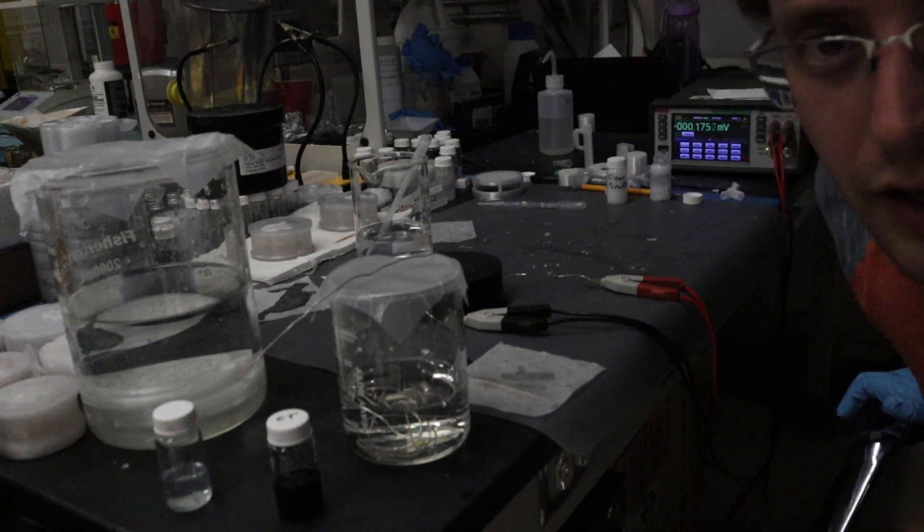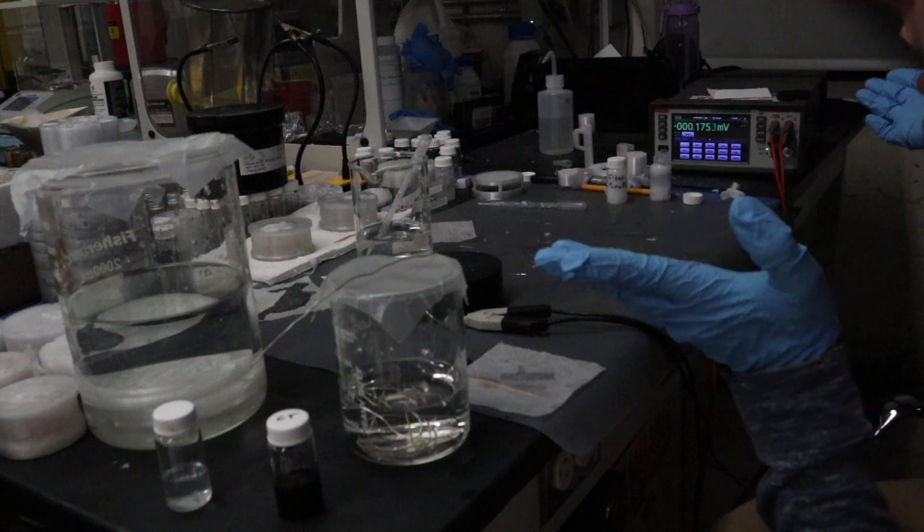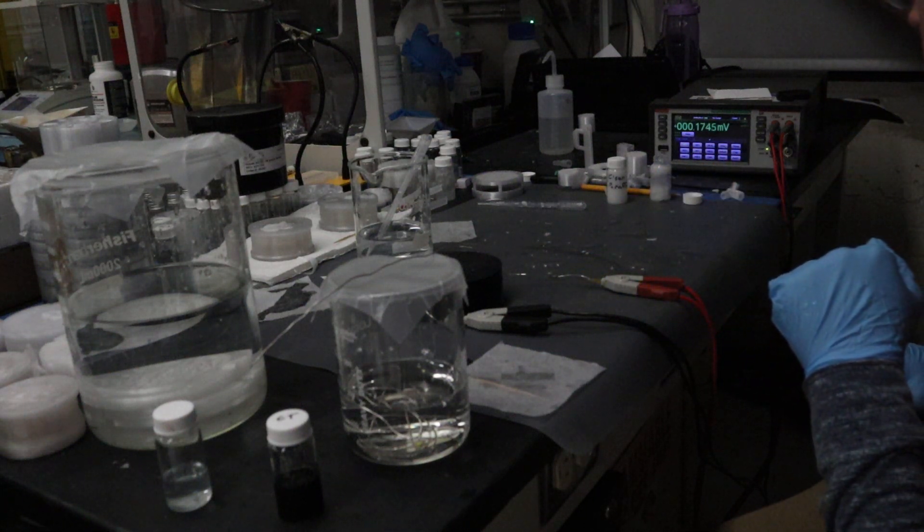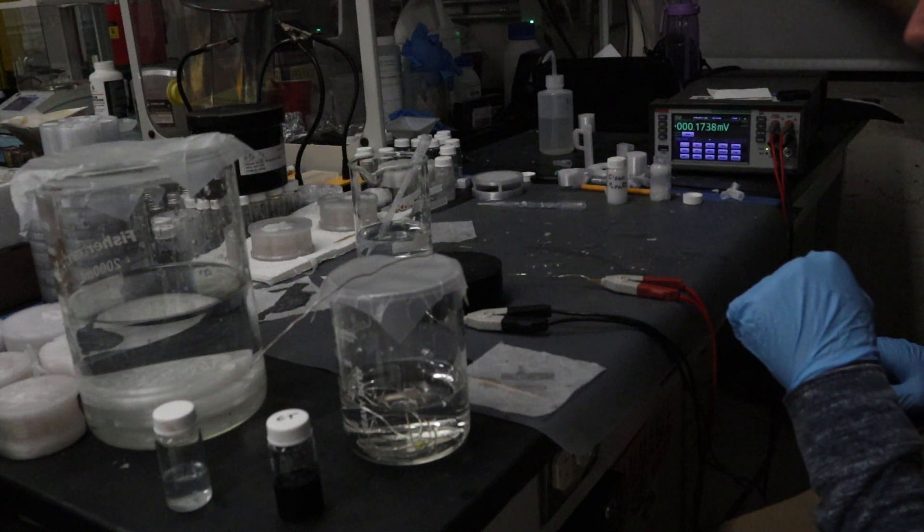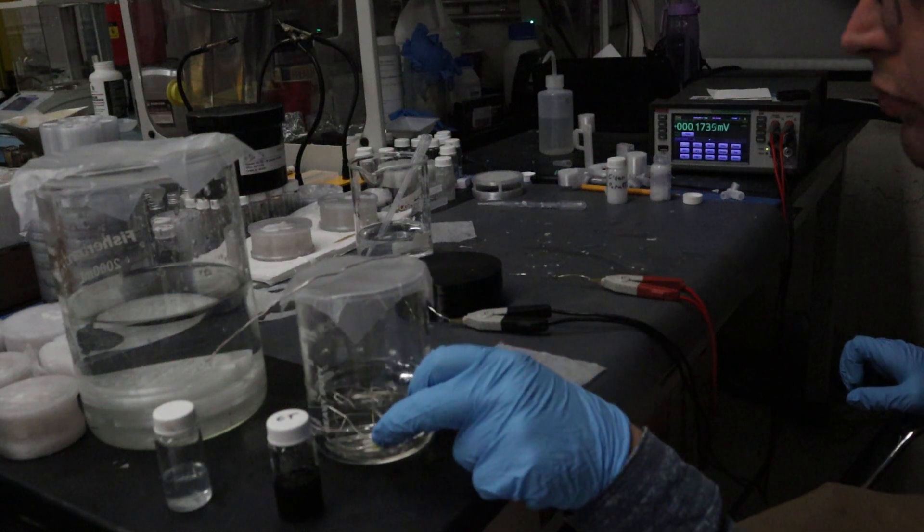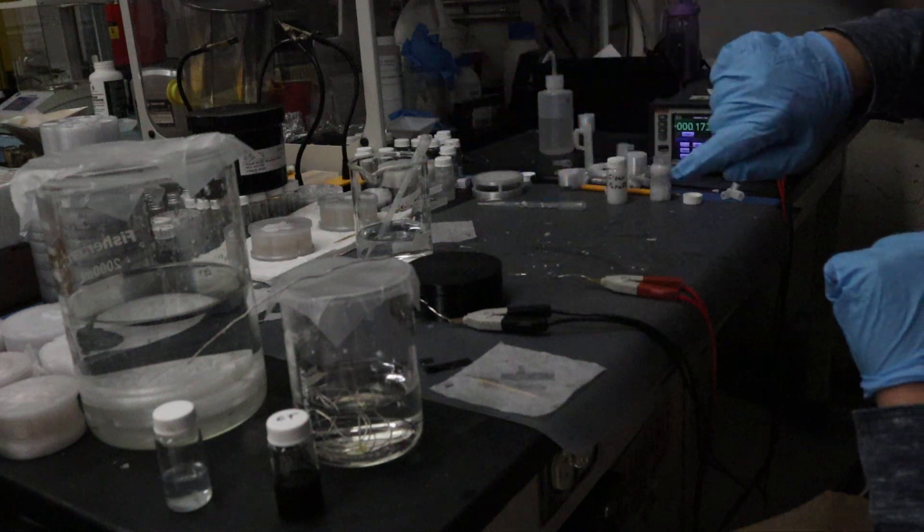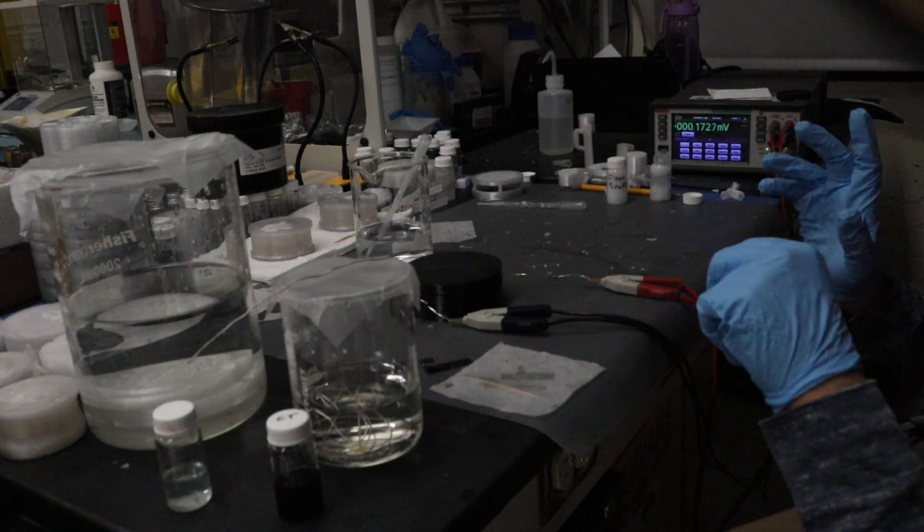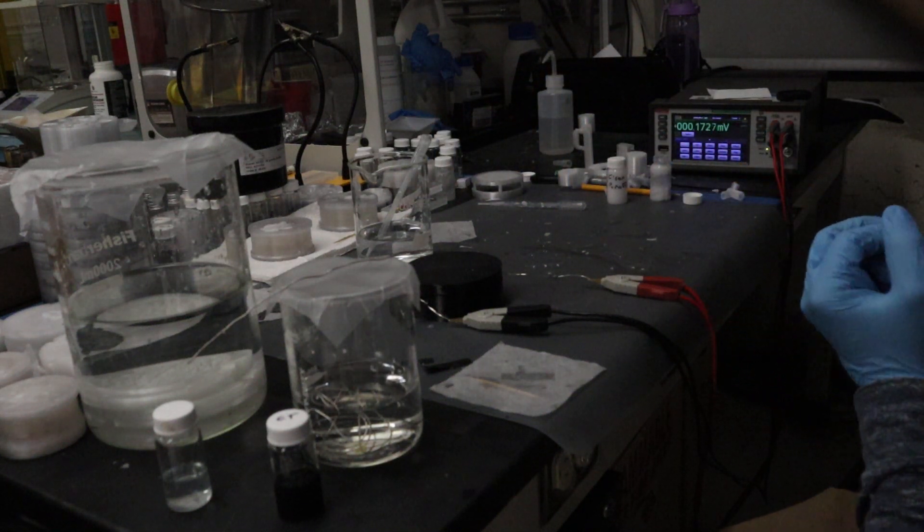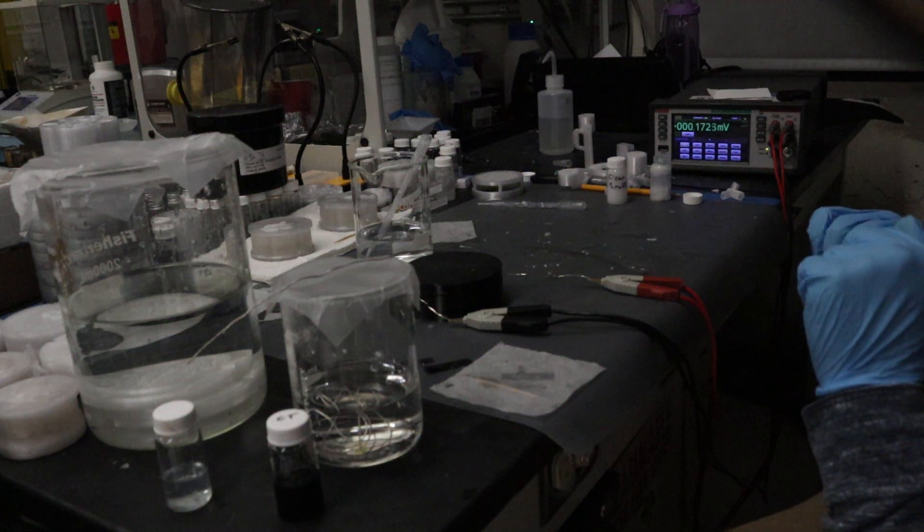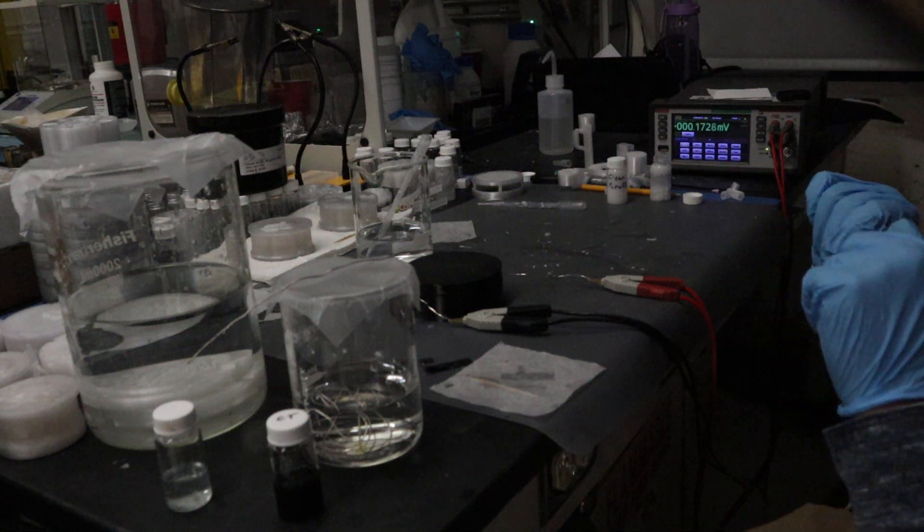All right, if everything's working we have a functioning device. So this setup has a bipolar membrane with two reciprocs on either side, and right next to the bipolar membrane there's two electrodes with graphitic carbon nitride.